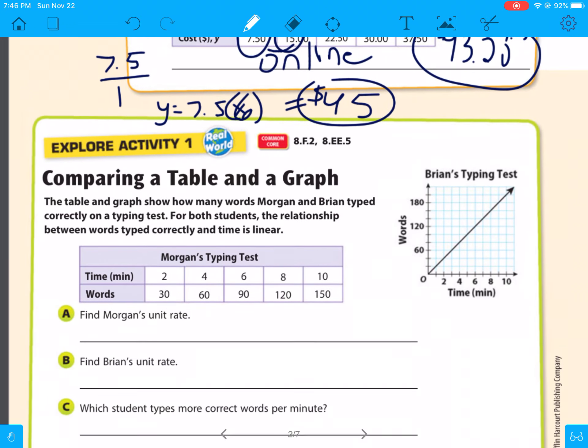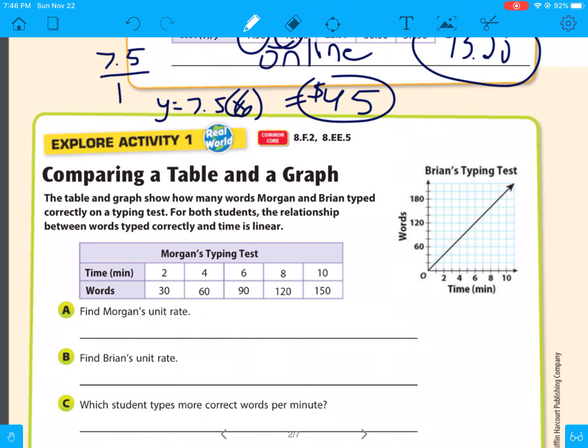So we also have comparing a table and a graph. So if you want to look for Morgan, Morgan's unit rate, change in y divided by change in x, 60 minus 30. So we'll use these two divided by 4 minus 2. So that's going to be 60 minus 30, 30 over 2 is 15. So Morgan types 15 words per minute.